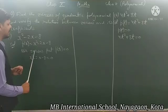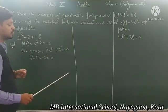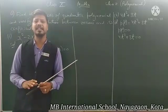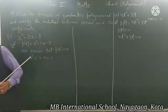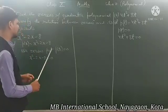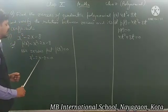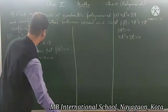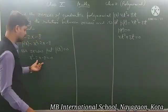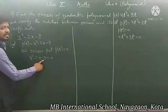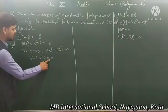Now, for finding zeros, you have to put p(x) equal to 0. As you know, when you want to find zeros, you put the polynomial equal to 0. So I put the polynomial equal to 0: that is, x² - 2x - 8 = 0.